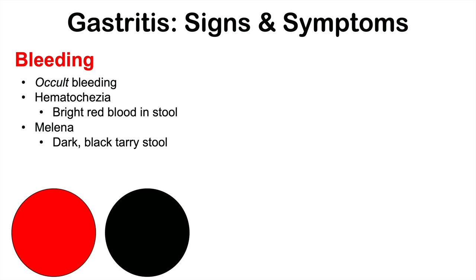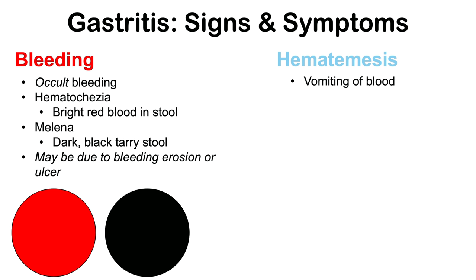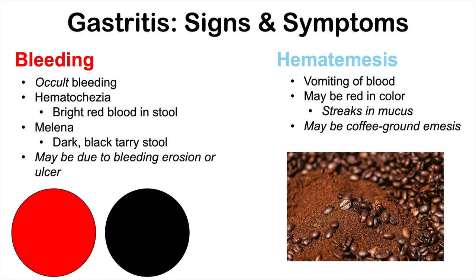This bleeding is going to be due to a bleeding erosion or ulcer — that inflammation in the stomach can lead to an erosion or ulceration. Some patients can experience hematemesis, which is vomiting of blood. This can be red in color — small amounts of blood or streaks of blood in the mucus. In some cases, it may be what we call coffee ground emesis, where blood has been partially digested by the stomach and then vomited up, looking like coffee grounds.